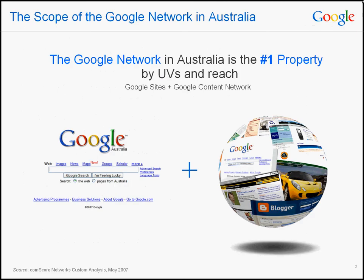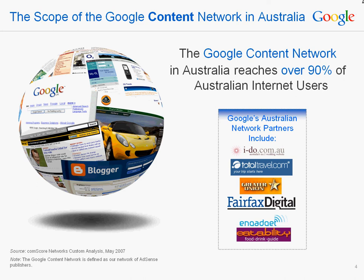Why would you want to advertise on the content network? Using the content network allows you to reach your customers not only when they search on Google, but also when they're searching for content across the web. When you take advantage of both our search and content networks, you'll show your ads across the number one online advertising network in Australia, reaching 91.9% of Australian internet users.